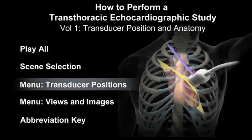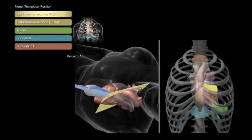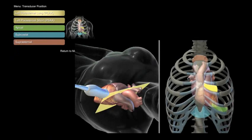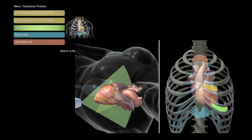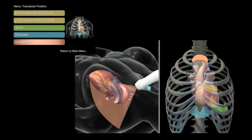The transducer position menu allows the user to view the anatomical landmarks and the transducer positions for left parasternal, apical, subcostal, and suprasternal image acquisition.